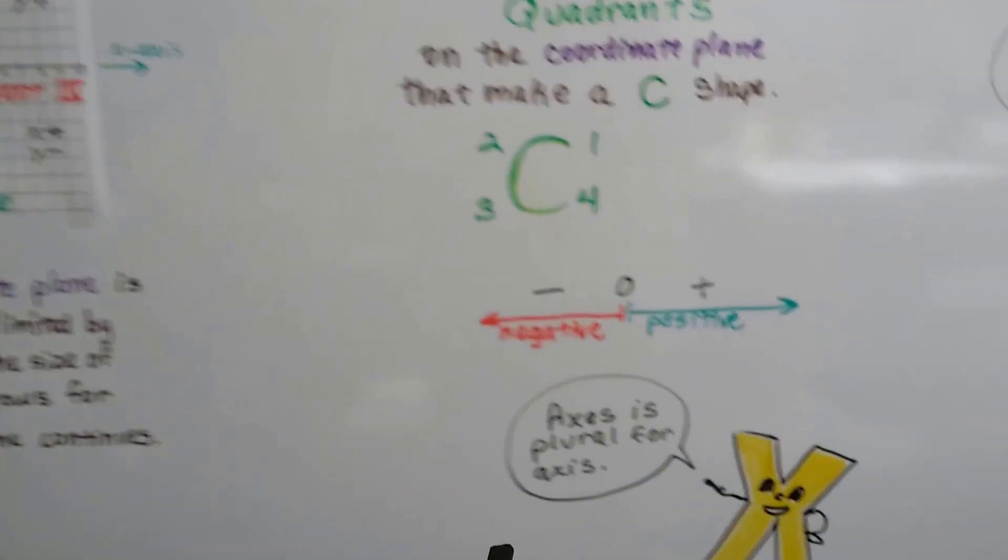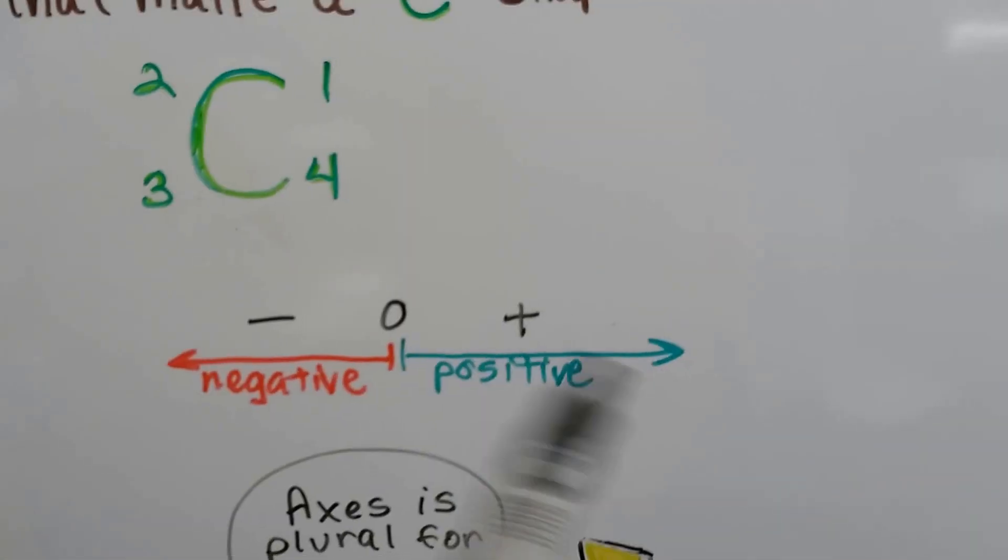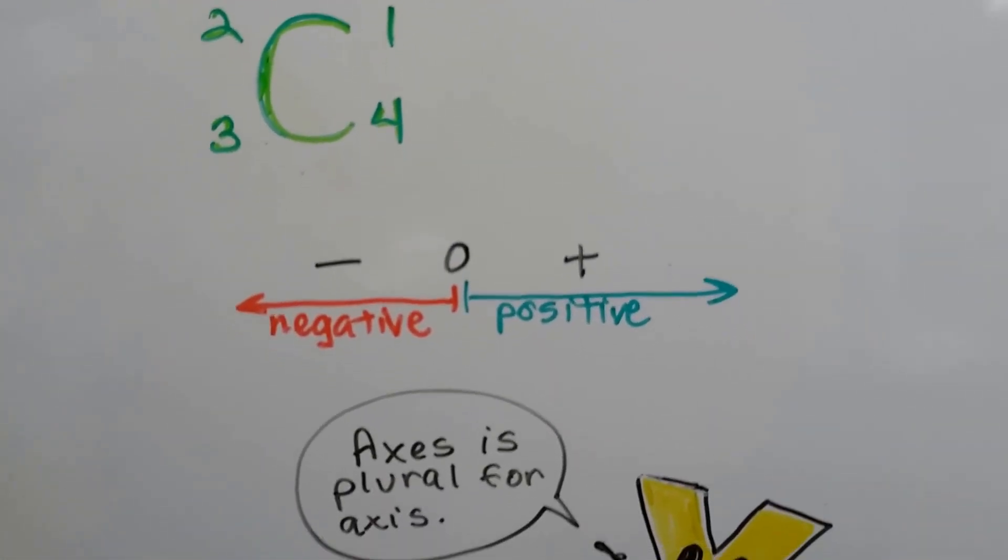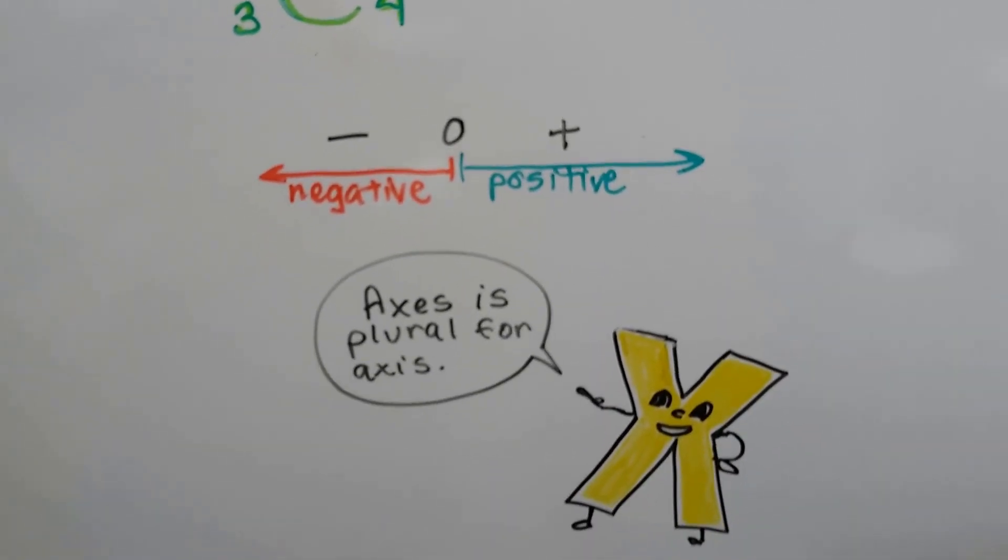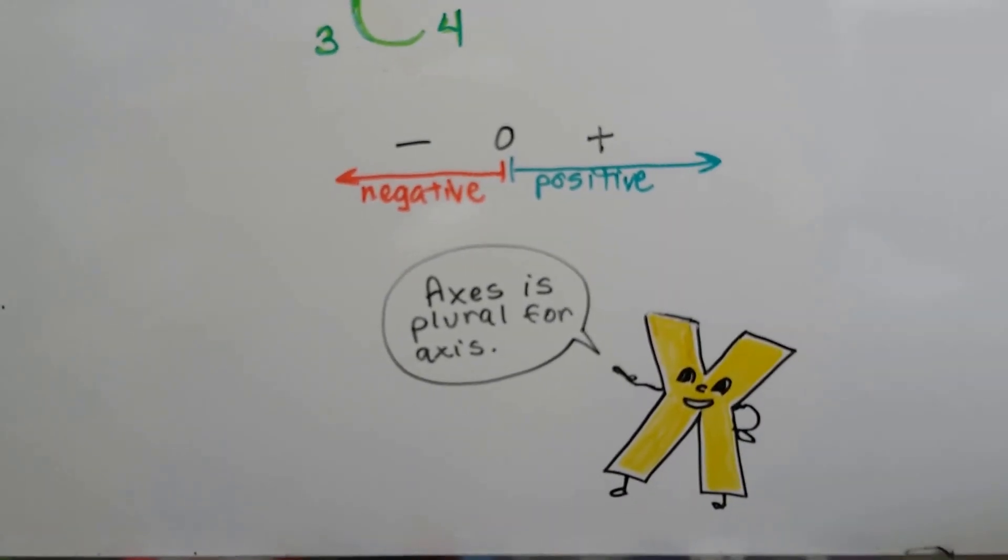Just remember, on each side of zero, that's where it changes from negative to positive, just like on a regular number line. And axes is the plural for axis.